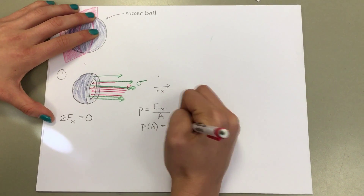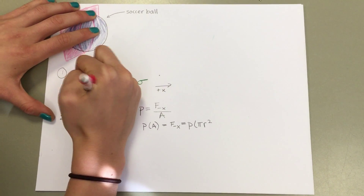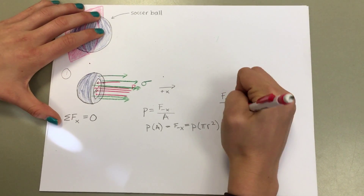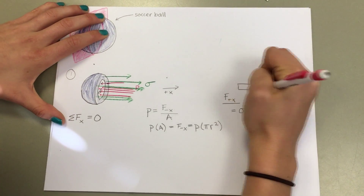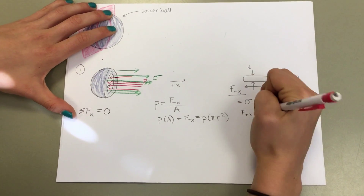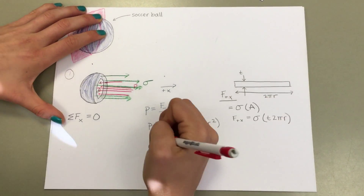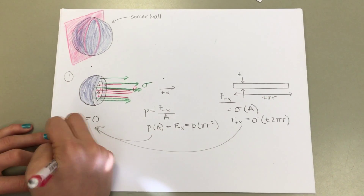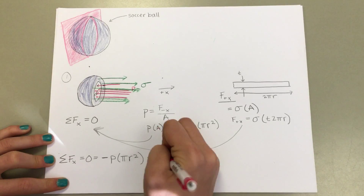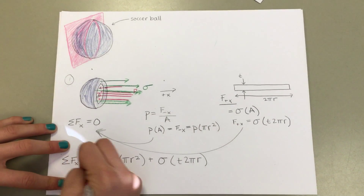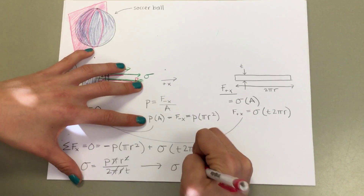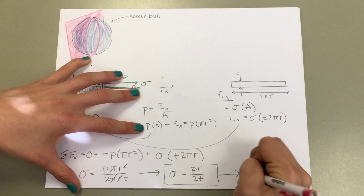Continuing with the static mechanics approach, we will set the sum of the forces in the x direction equal to zero. Since we know that pressure is equal to a force divided by area, we can define the force acting in the negative x direction as internal pressure p times the area of the cross section pi r squared, where r is the radius of the circular cross section. Next, we can define the force acting in the positive x direction as the hoop stress sigma times the circumferential area, which is the thickness t multiplied by the circumference 2 pi r. Plugging these forces into the equilibrium equation, we can solve for sigma, the hoop stress. This simplifies to pressure times the radius divided by 2 times the thickness.